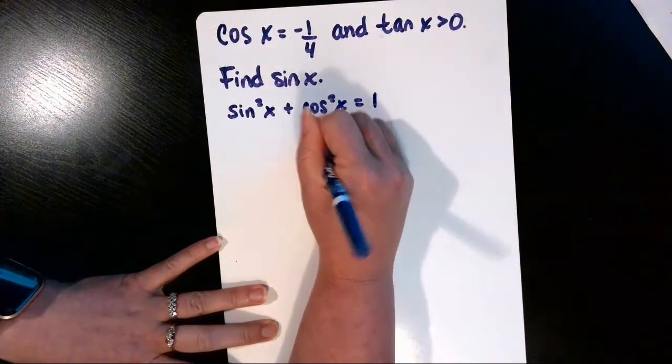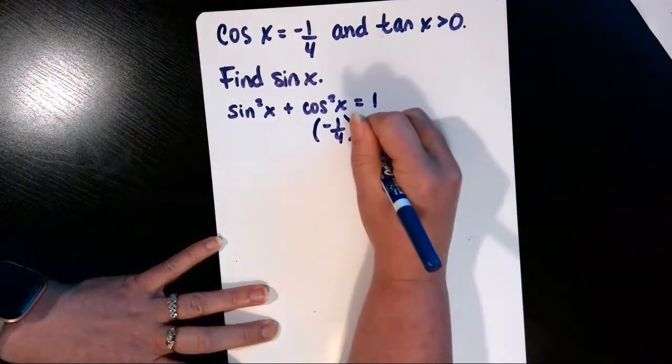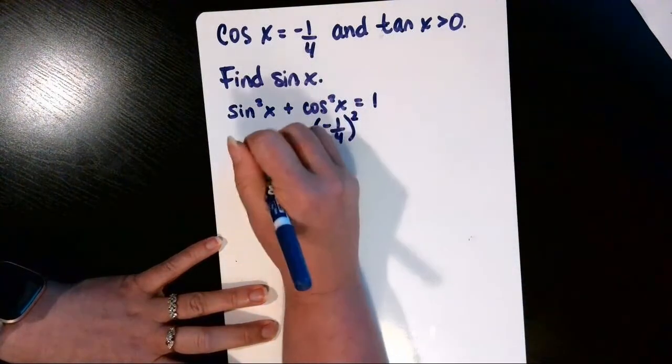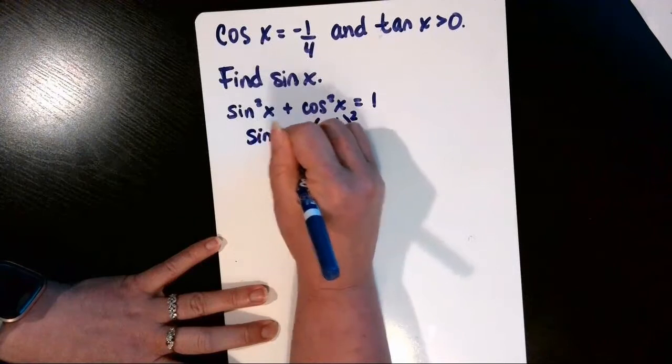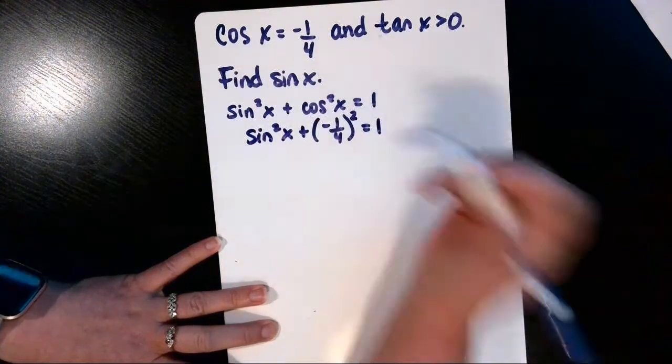we can substitute in negative 1 fourth for cosine of X and we're going to need to square that. We'll add sine squared of X and that's equal to 1.